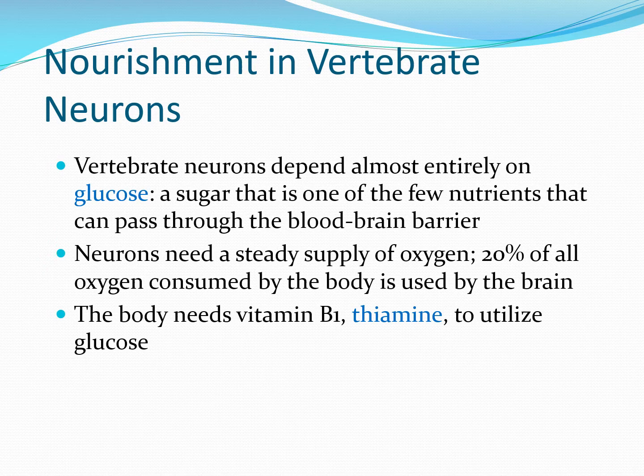Some things that need to get through to the brain are important for nourishment and for cells to maintain energy. Glucose provides energy for the cells — it's what's converted into ATP, the cell's energy. It's one of the few nutrients with its own active transport system through the blood-brain barrier. Neurons also need oxygen constantly; in fact, 20% of all oxygen consumed by the body is used by the brain. The body also needs vitamin B1 or thiamine in order to utilize glucose.